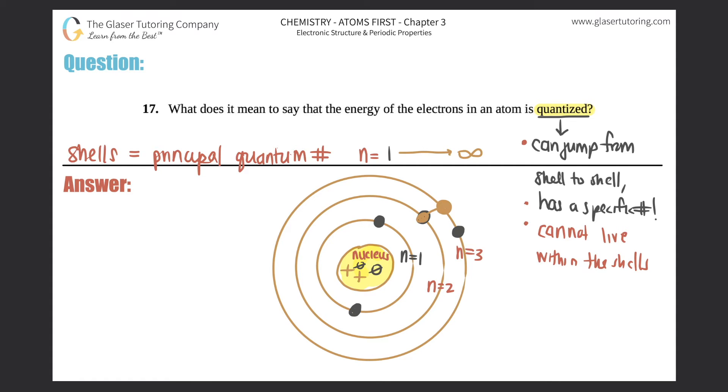So no electron will ever be located here—right in between two and three. An electron has to either be in shell two or it has to be in shell three, but it will never be found halfway in between any of them. So halfway between one and two, halfway between two and three, etc.